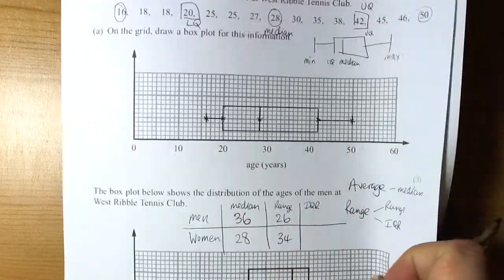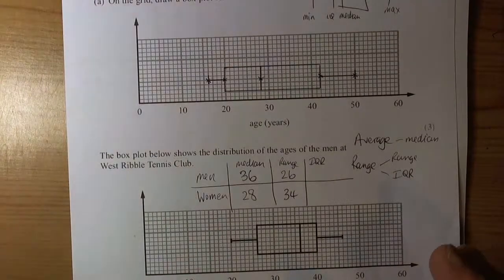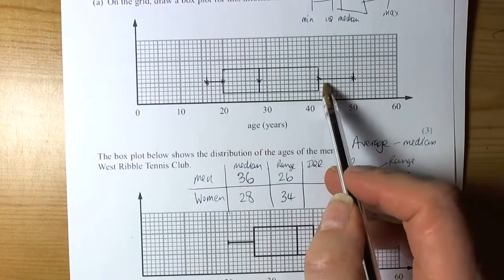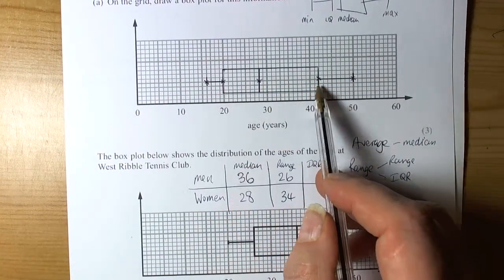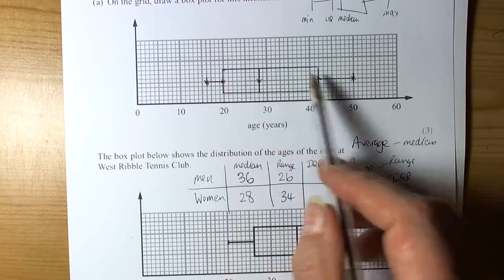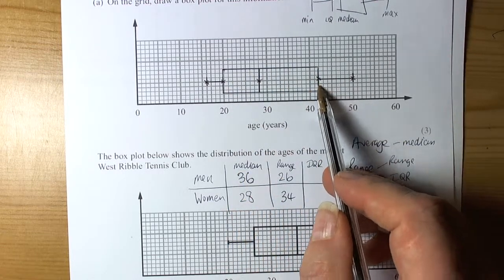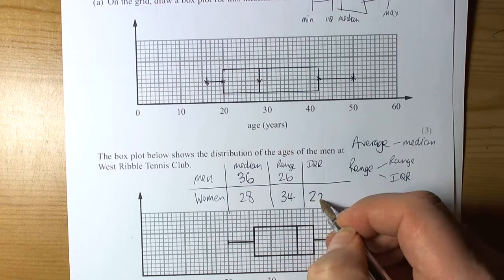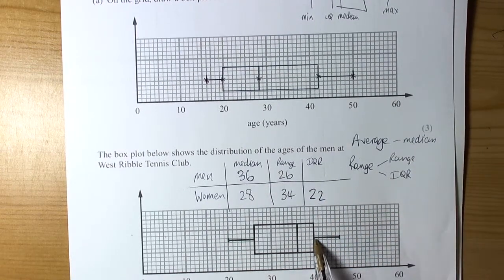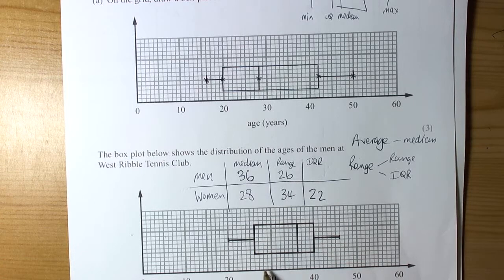The interquartile range, well, for the women, we can see that the width of the box, which is the upper quartile value, take away the lower quartile value, was 22. So, for the women, the interquartile range was 22. And for the men, the width of the box was going from 40 to 26, so that was 14.